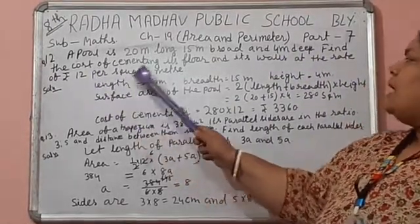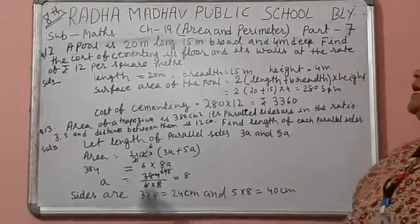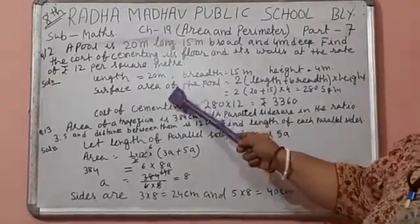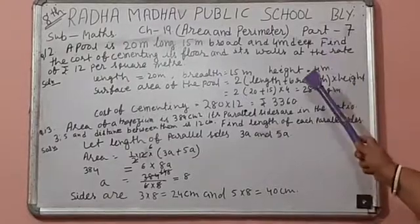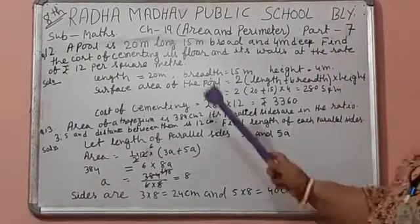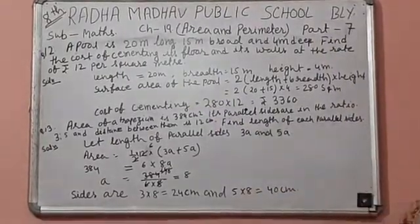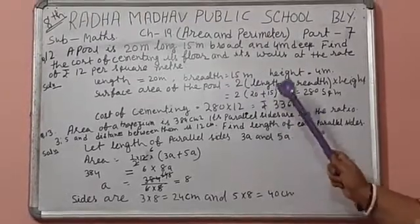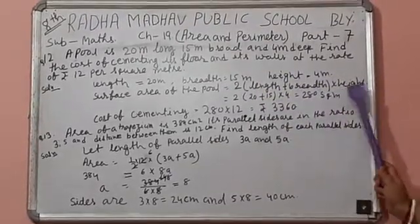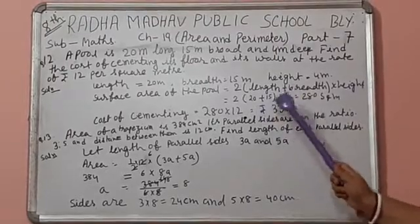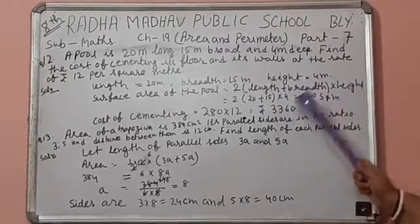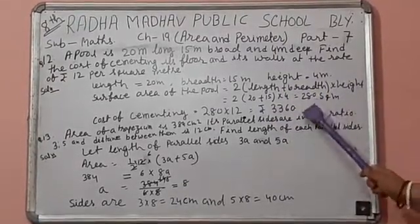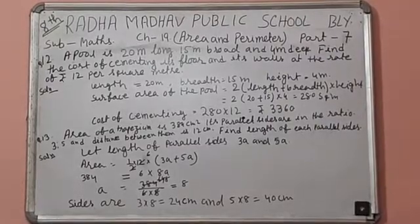So, length of the pool is 20 meters, breadth is 15 meters, height is 4 meters. Surface area formula is 2(length + breadth) × height. 2(20 + 15) × 4 equals 280 square meters.